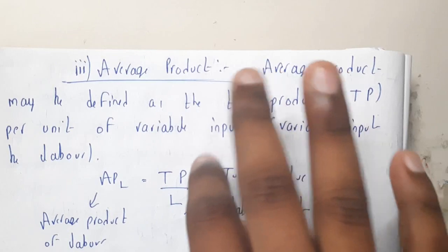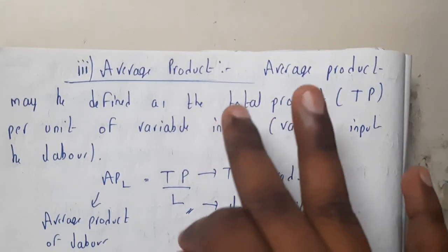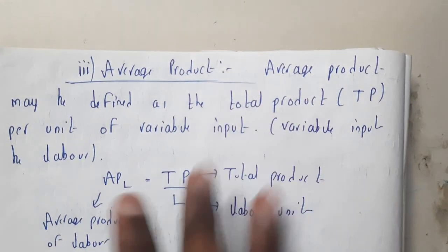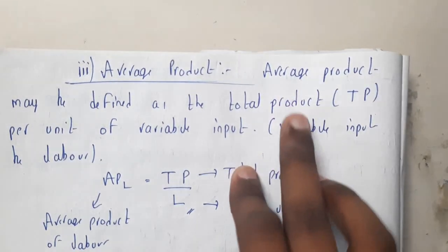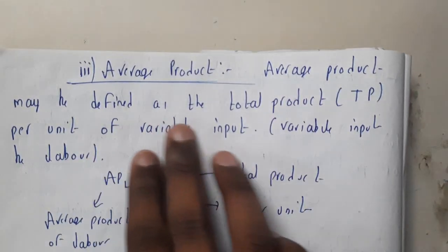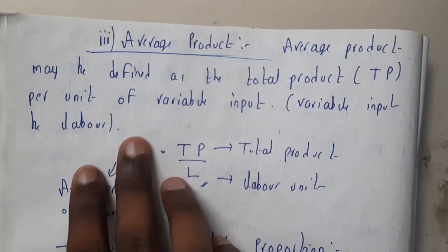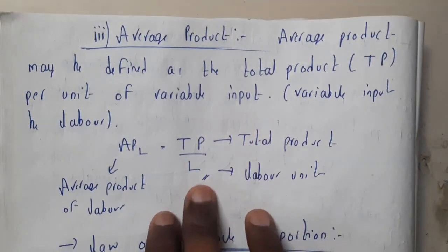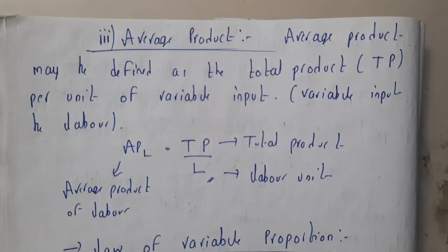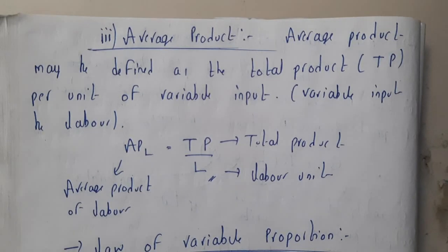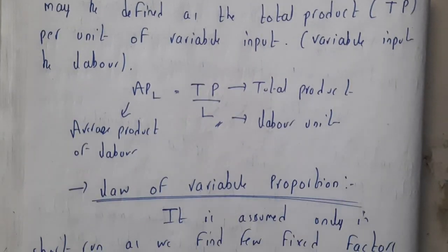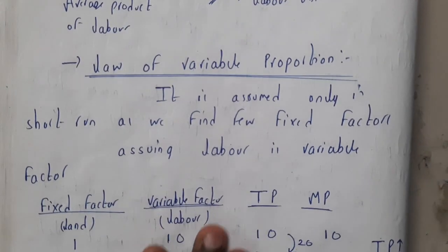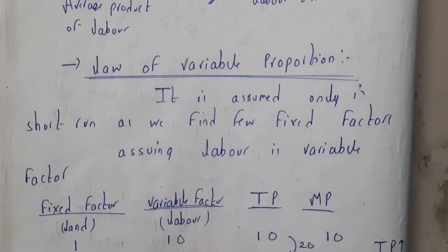Average product is the ratio of total product to labor. Per unit of labor, you compute the ratio — that is your average product. Average product may be defined as total product (TP) per unit of variable input. As you vary the labor input, the average product will also change accordingly.